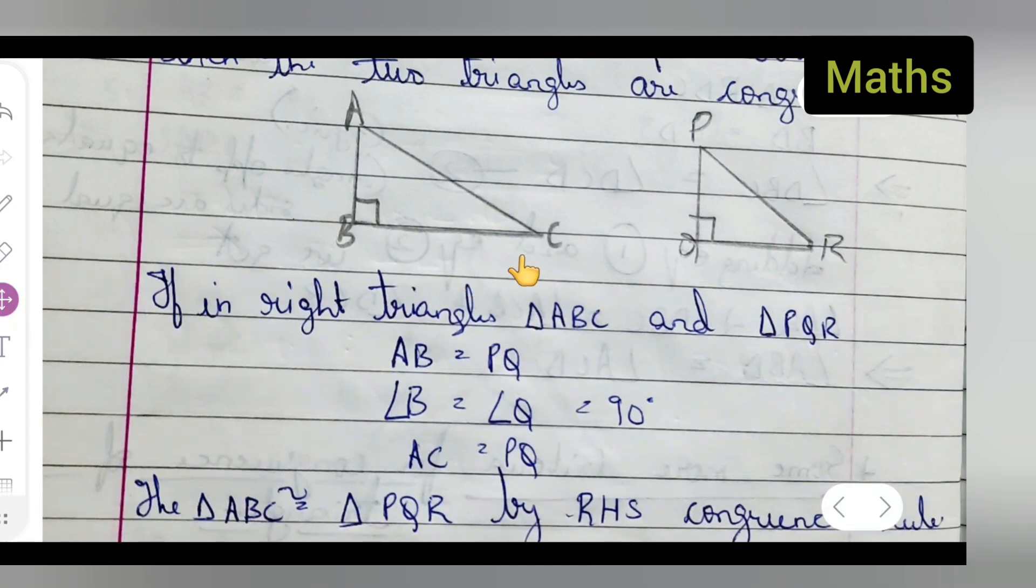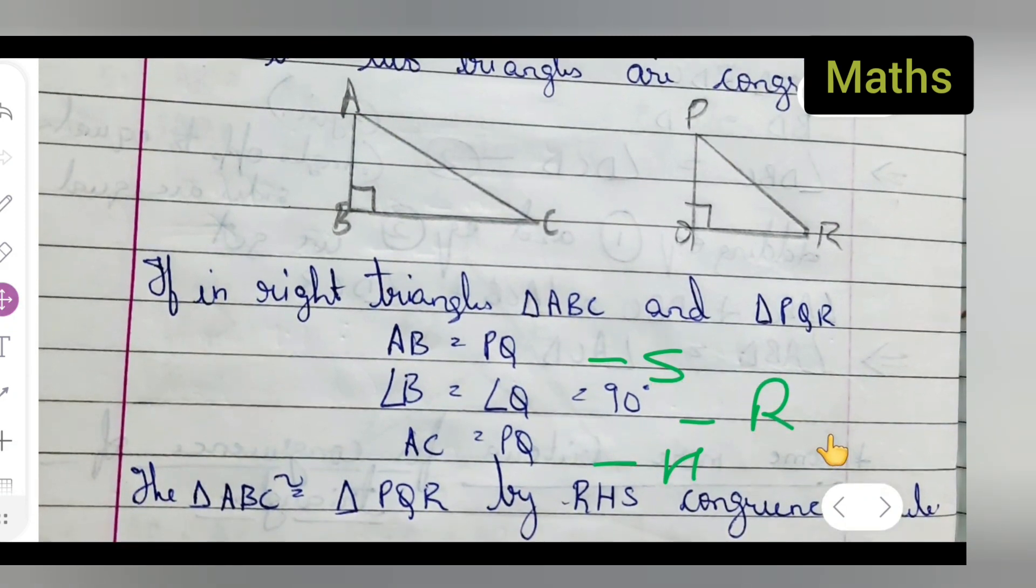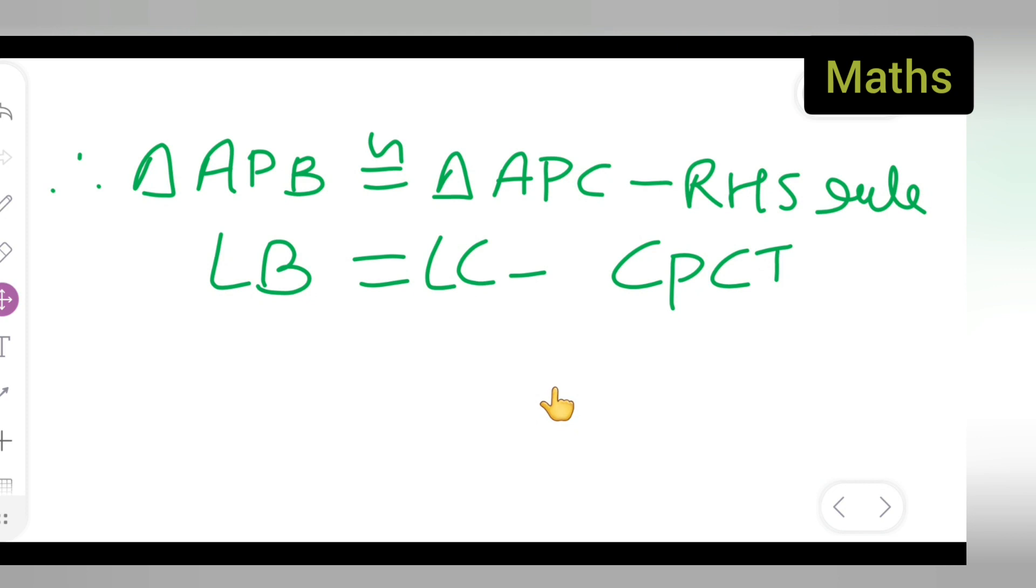From these two triangles, this is 90 degrees. This will be your AC and PQ will be your hypotenuse and this will be your side. This AB is equal to PQ is a side, and AC and PQ are the hypotenuse. So you can take down these rules. I hope you have understood how to do this and thanks for watching.